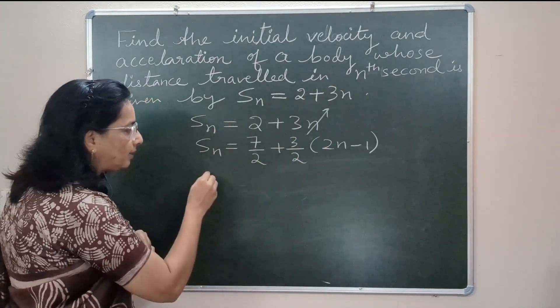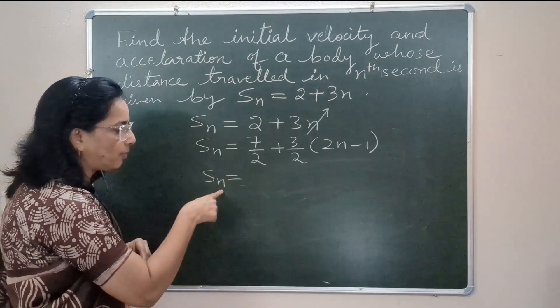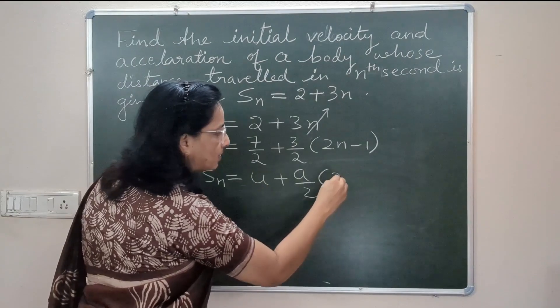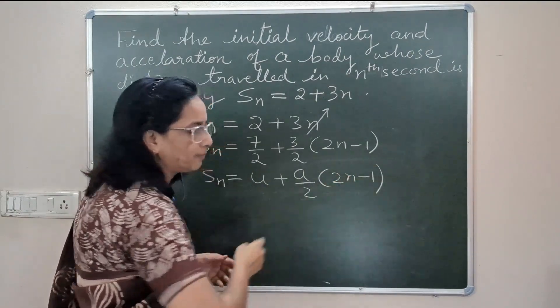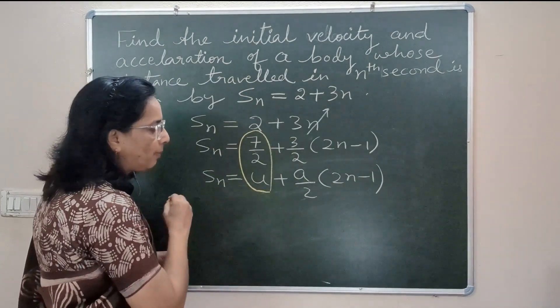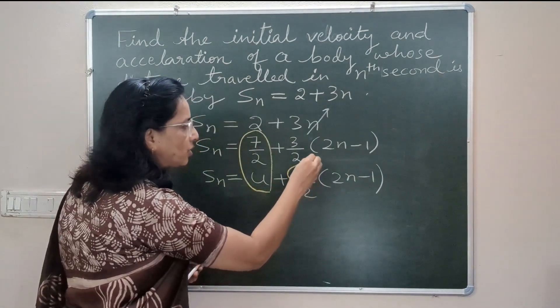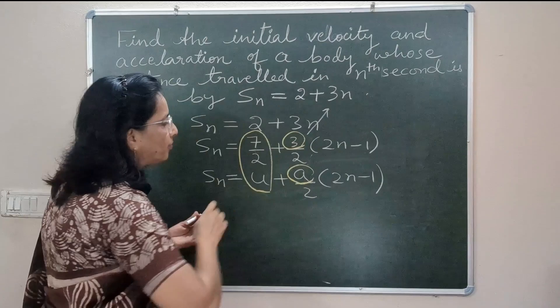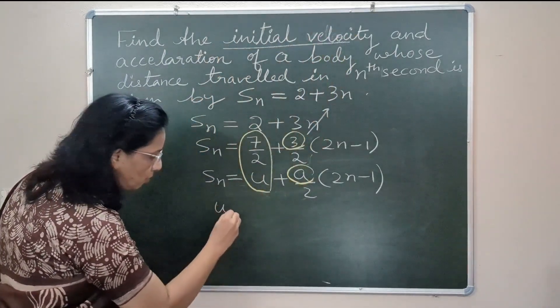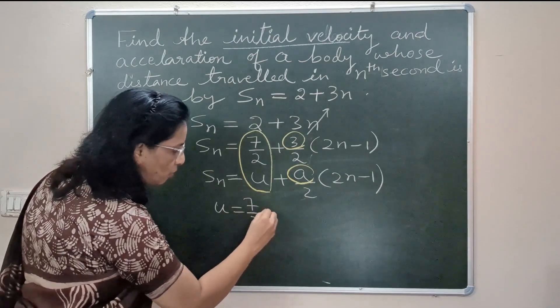Now since this is the distance traveled by a body in the nth second, the converted form, we will compare this with the standard form. Standard form is Sn = u + (a/2) times (2n - 1). On comparing, we will see u is 7/2 and acceleration is 3.